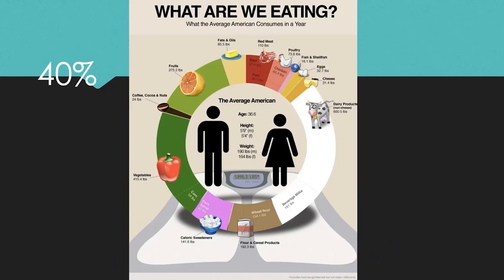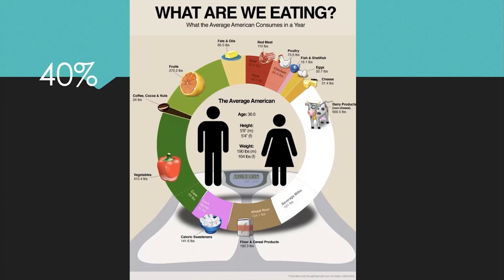This is a graph from NPR based on USDA numbers showing what Americans normally eat. According to this graph, we eat almost 2,000 pounds of food a year on average. About what you see — we eat a lot of sugar, by the way, and drinks. If you add up the numbers, about 40% of the food in both mass and type can be grown in our backyards.